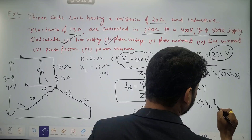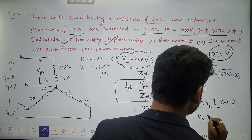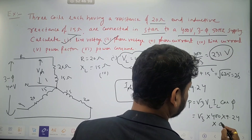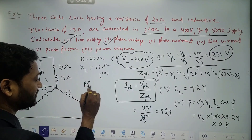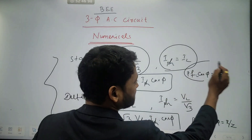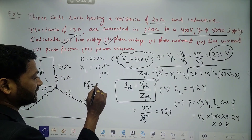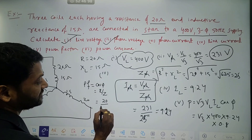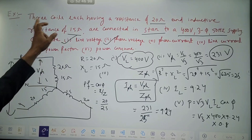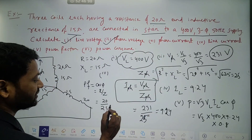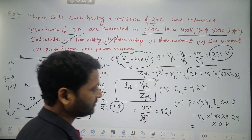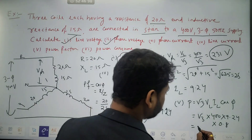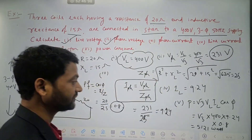Power is root 3 times VL times IL times cos phi. Root 3 times VL is 400, IL is 9.24, and power factor — cos phi is R by Z, which is 20 by 25, coming to 0.8. So power is root 3 into 400 into 9.24 into 0.8. If you multiply, the answer is coming 5,210 watts.